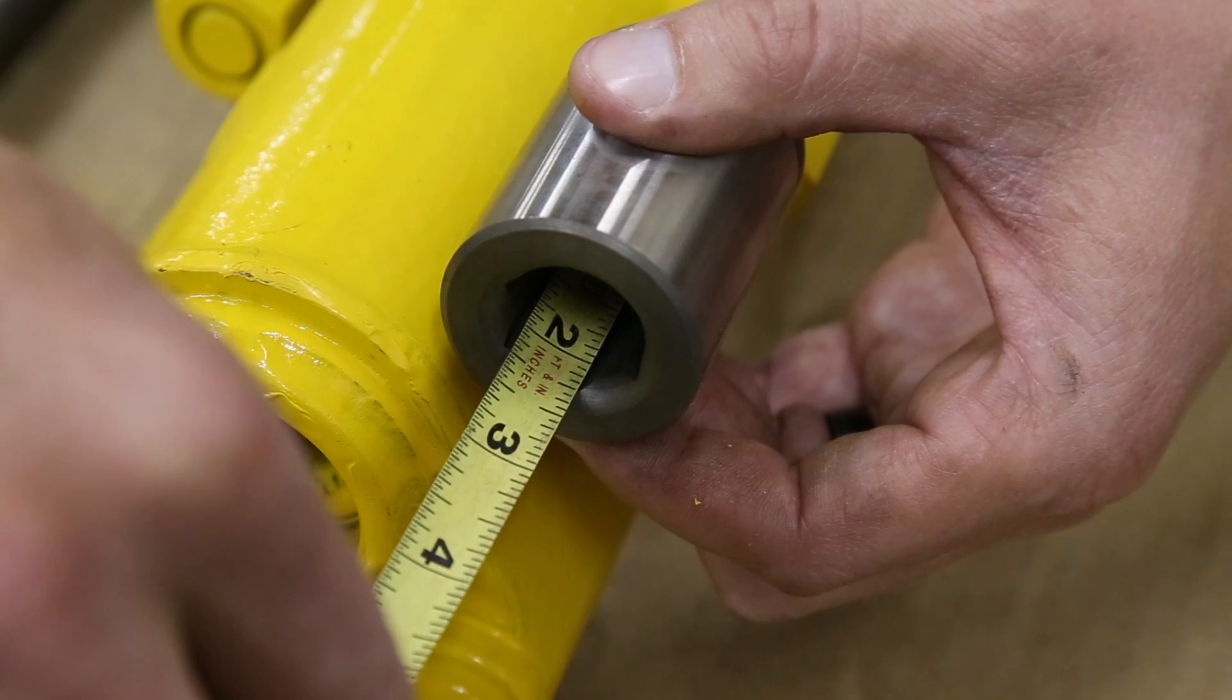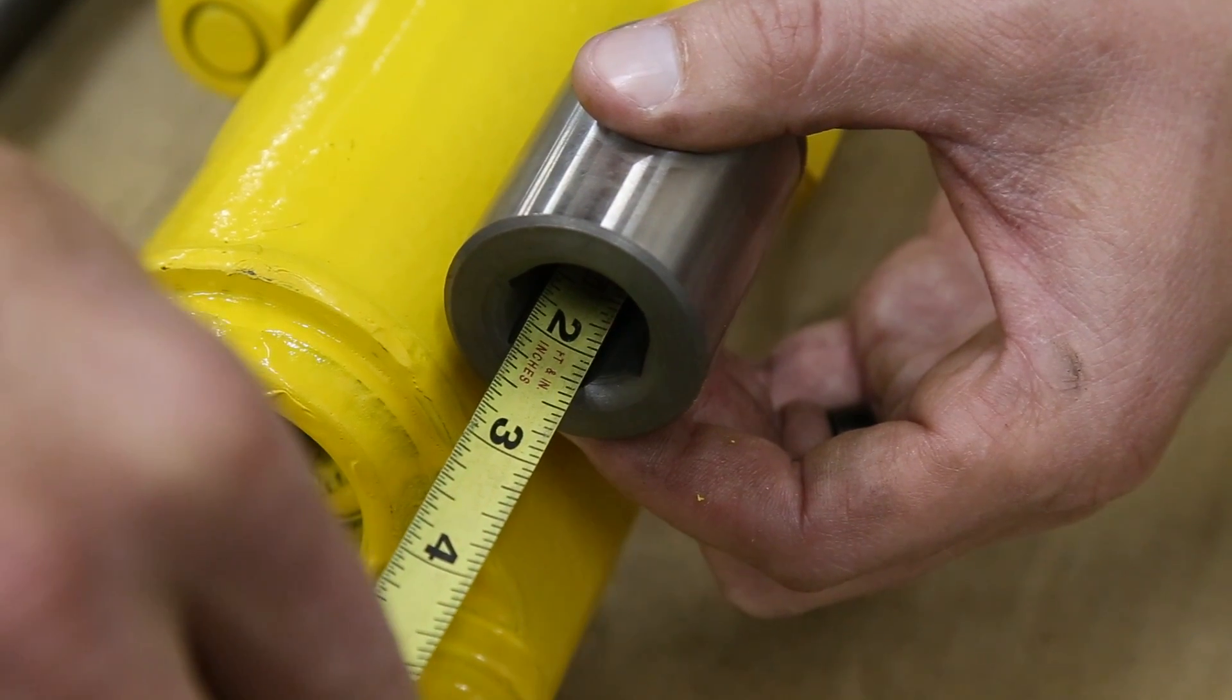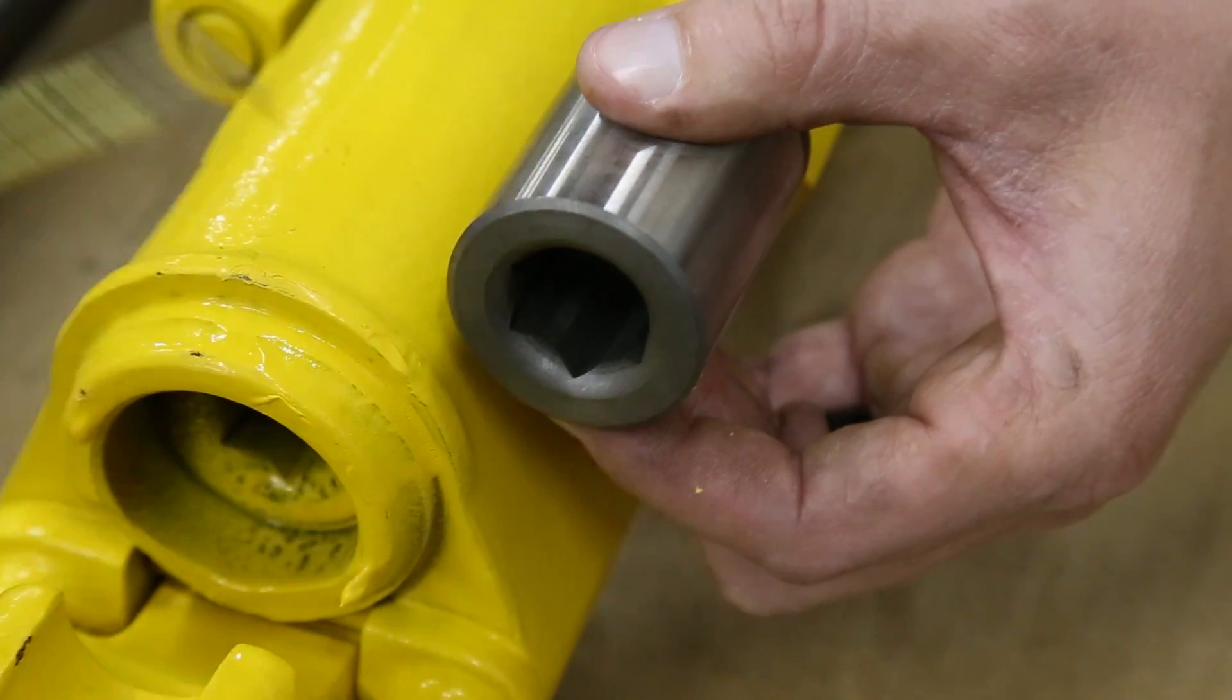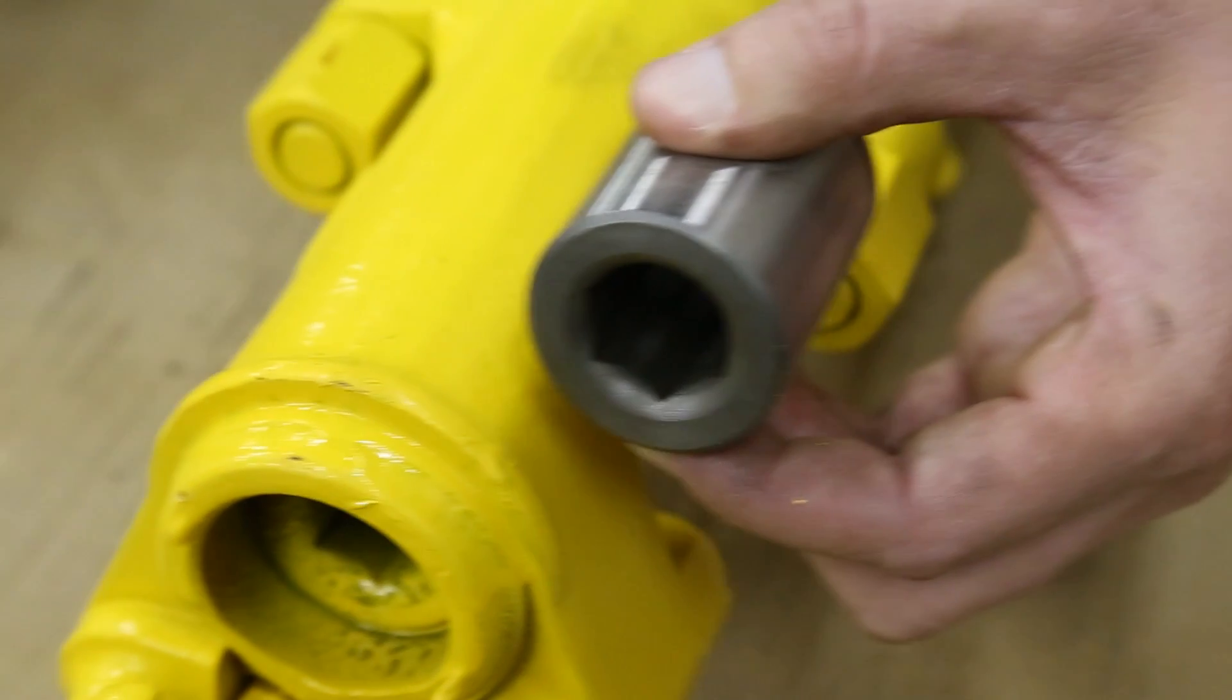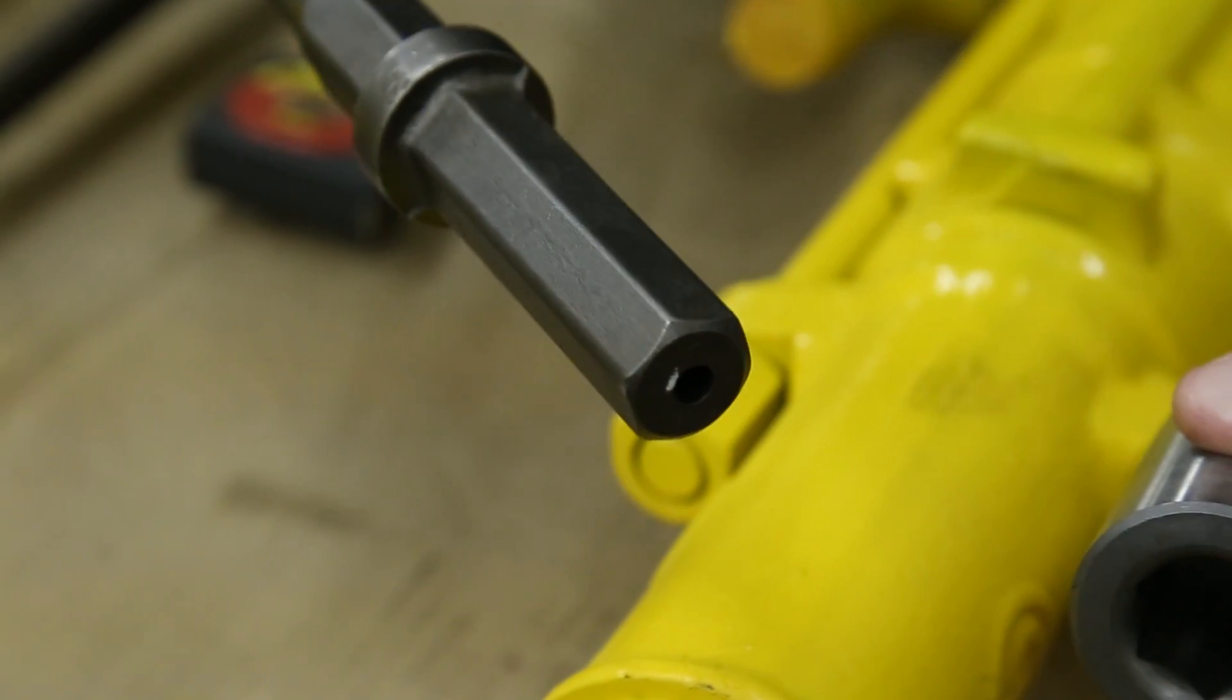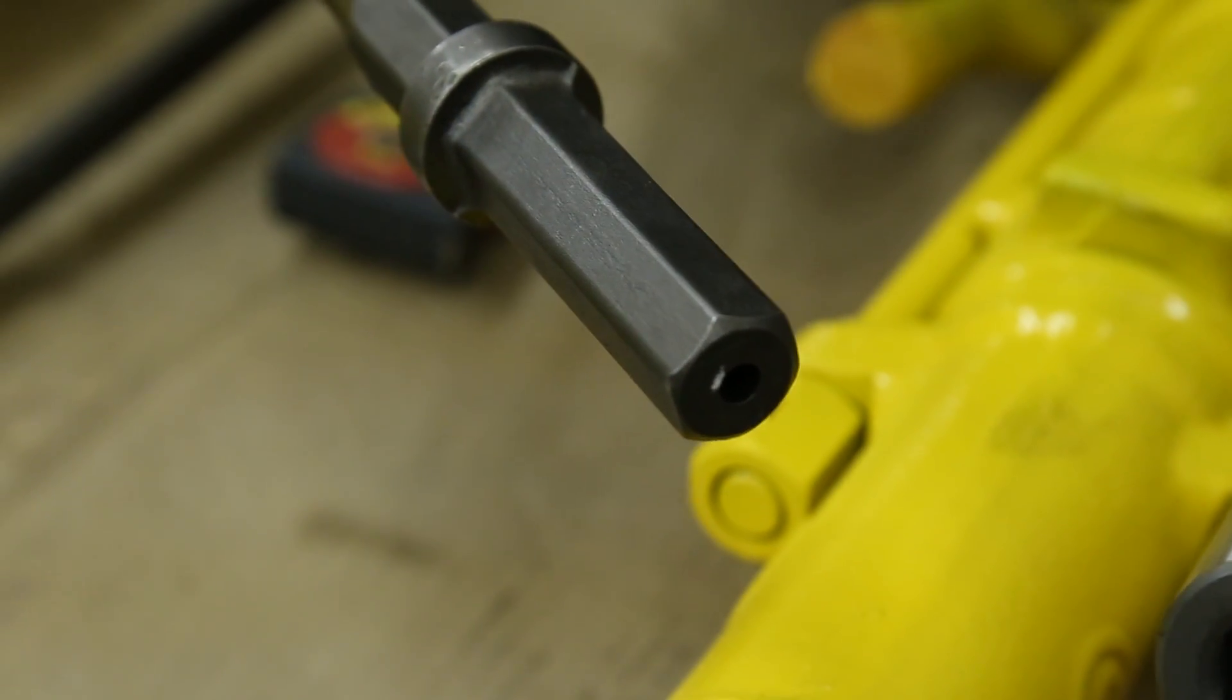Hook it on the back, you'll measure 2 1/4 inches. That means you have a 7/8 by 3 1/4 inch chuck. So you need to order a 7/8 by 3 1/4 inch shank bit.